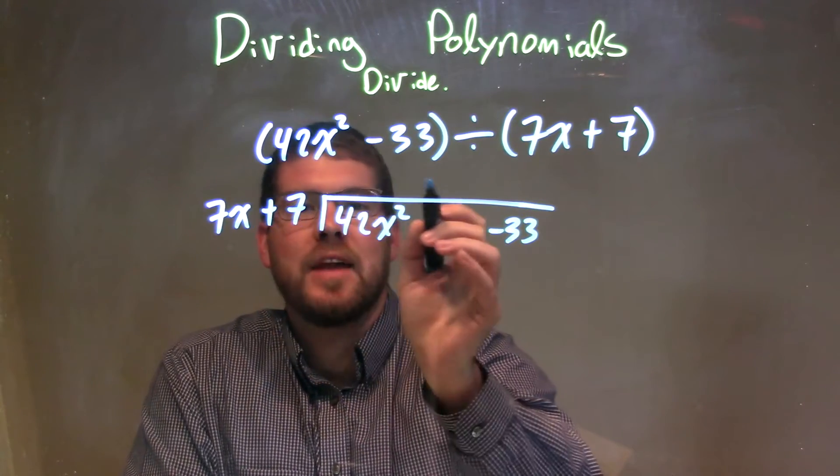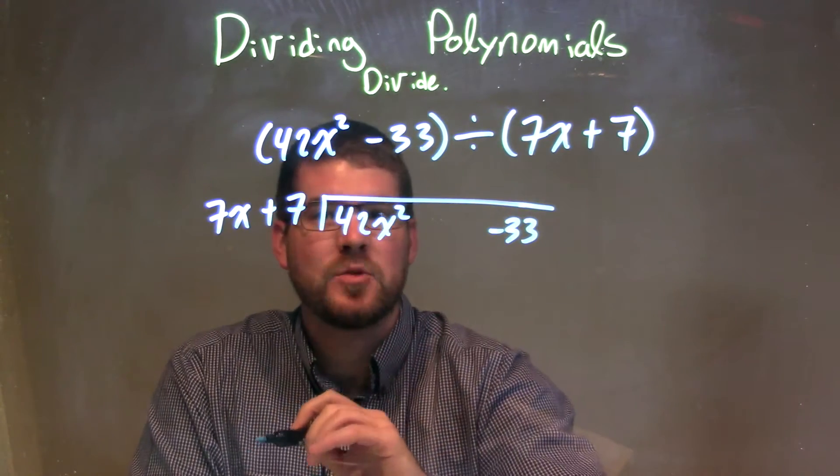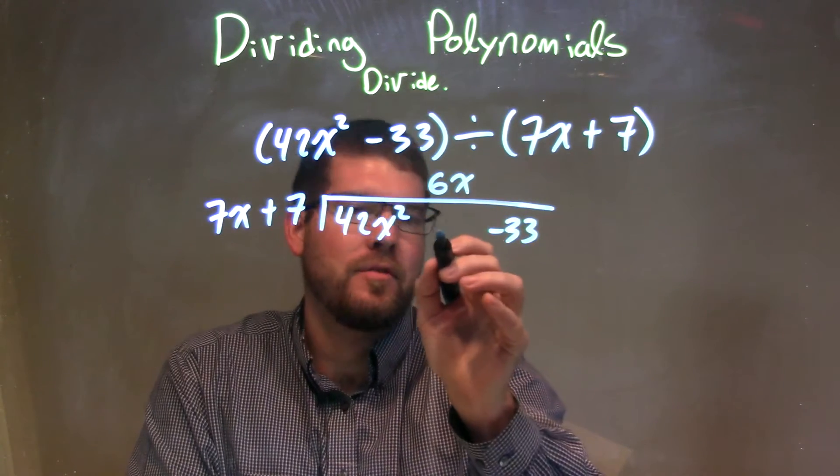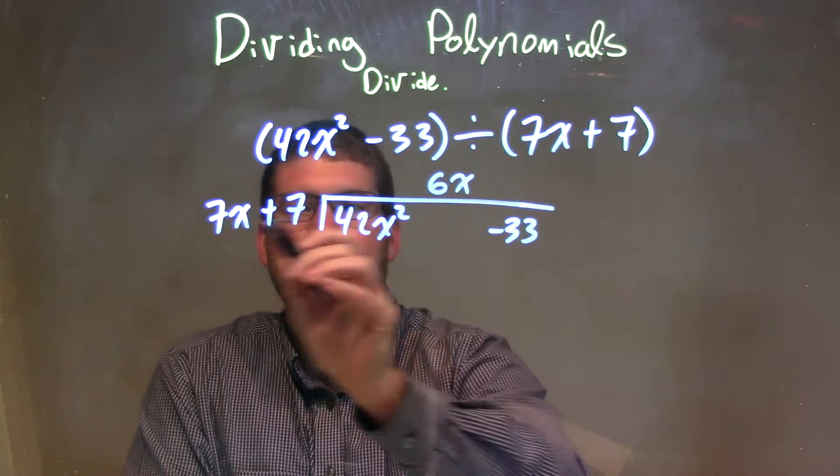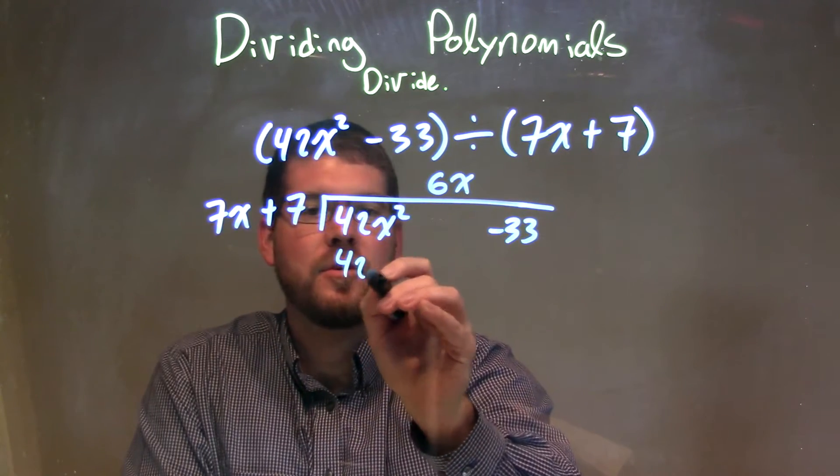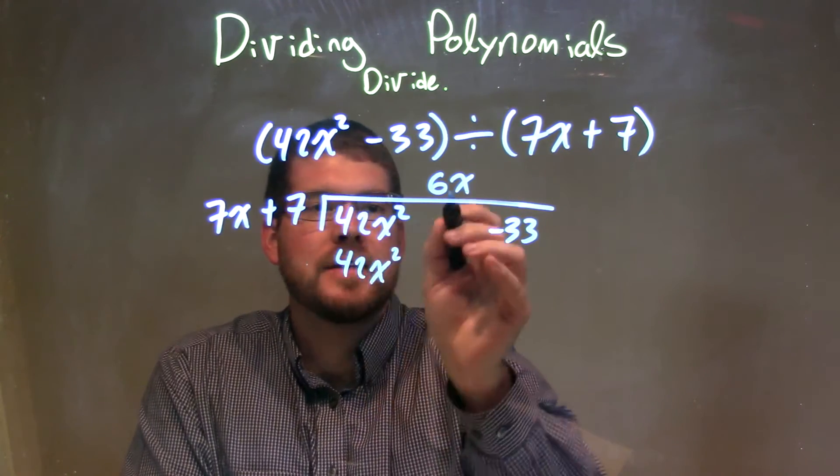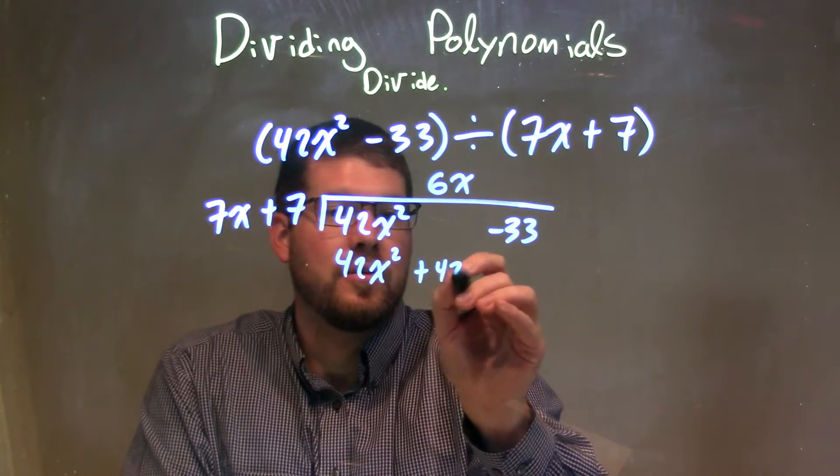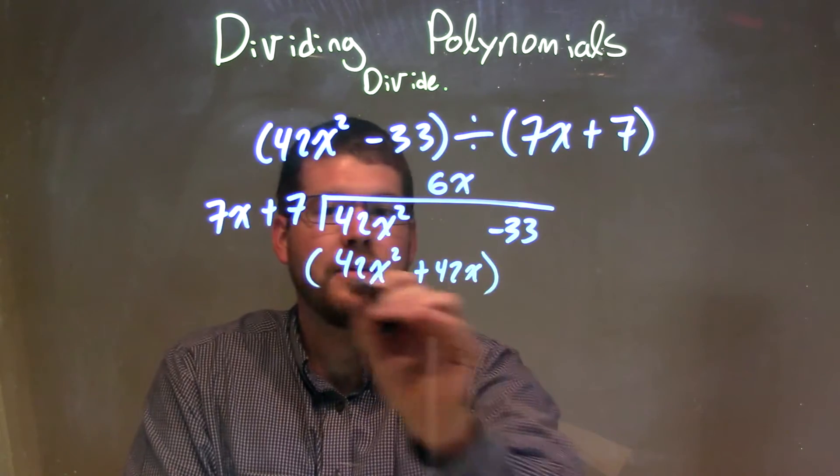So what times 7x gives me 42x squared? That's just 6x. So I'm going to put that 6x where the x value would be. So 6x times 7x is 42x squared, and then 6x times 7 is 42x. So we have a plus 42x, we subtract them right here.